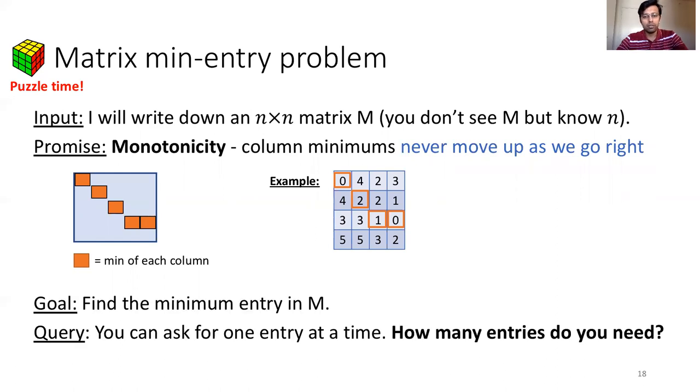The game is to find out the minimum entry of the matrix M. The only access you have over M is that you can ask me for any specific entry of M and I will provide it to you. Your job is to ask from me as frugally as possible. So how many entries do you need to find out the minimum entry of the matrix M? You can pause the video here to think for a few minutes. I will give you the answer in the next slide.